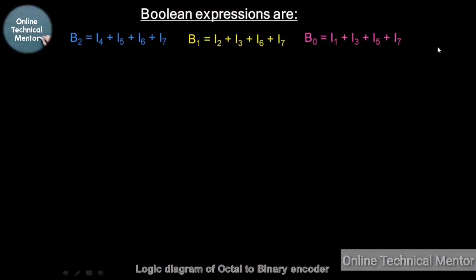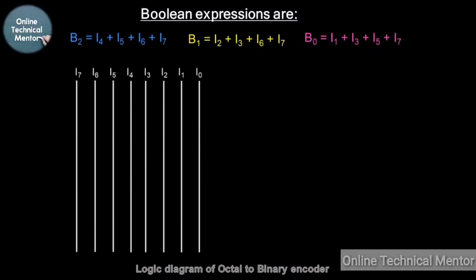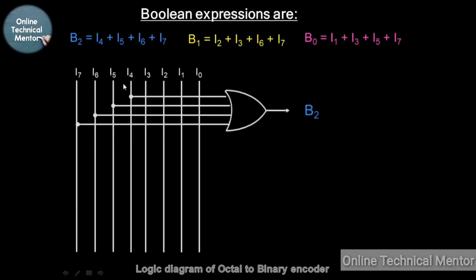There are lines I1, I2, I3, I4, I5, I6, and I7, so draw those lines first. I have drawn I0 to I7 from right to left. For the first expression, B2: when I4, I5, I6, or I7 are high, B2 becomes high. So draw a connection from I4, I5, I6, and I7, perform an OR operation between them, and you will get B2.